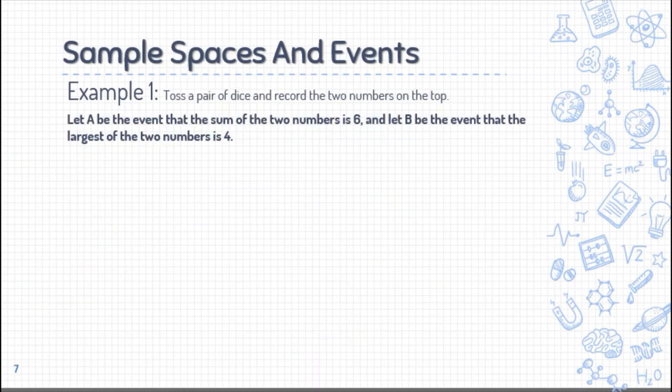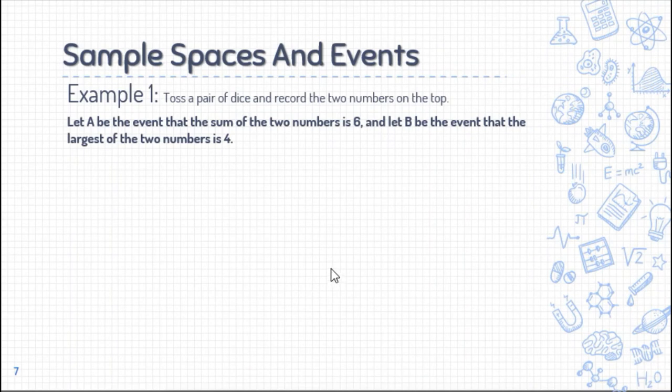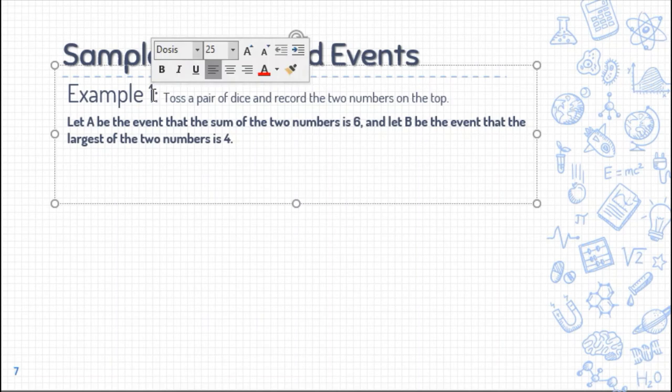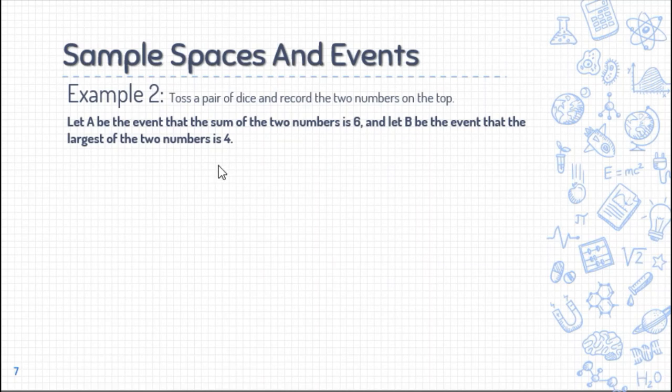So that is our first example. Now let's proceed to the second example. This is our example number 2. Toss a pair of dice and record the numbers on top. Let A be the event that the sum of two numbers is 6, and let B be the event that the largest of the two numbers is 4.